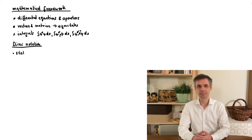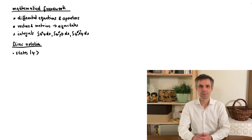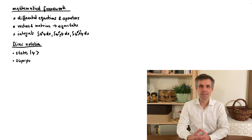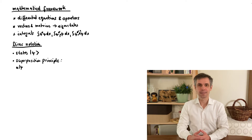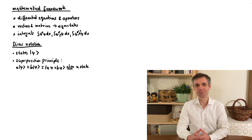In this notation we denote a quantum state by the following symbol: a vertical line followed by the name of the state — which is here just psi — and then a right-pointing angle bracket. Physically we interpret this as the quantum state, and mathematically this is just a vector. Just as vectors, we can add these states linearly with arbitrary constants in front of them. This is really the most general manifestation of the superposition principle.